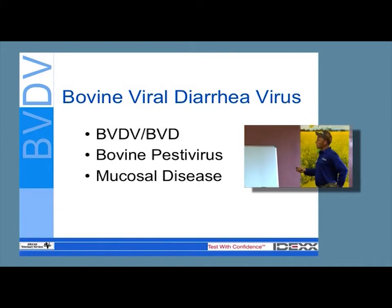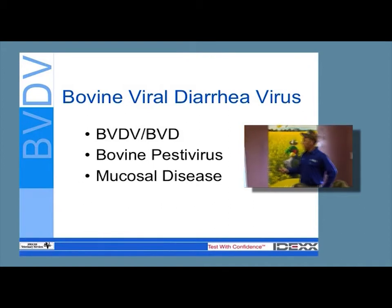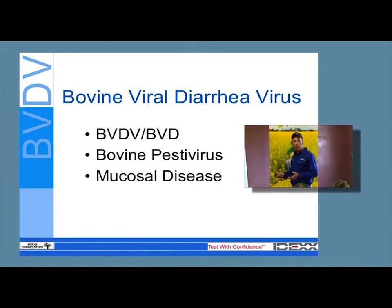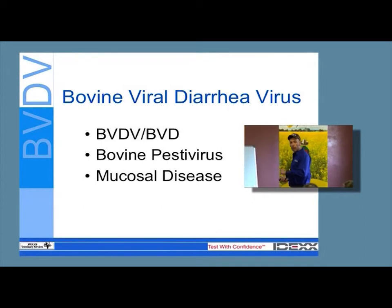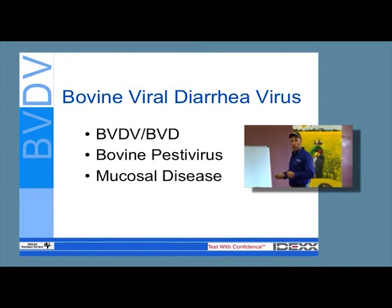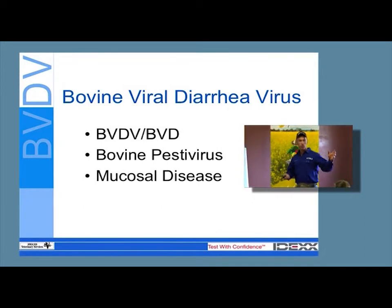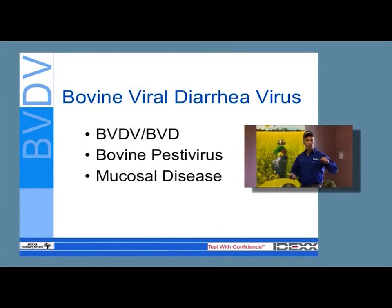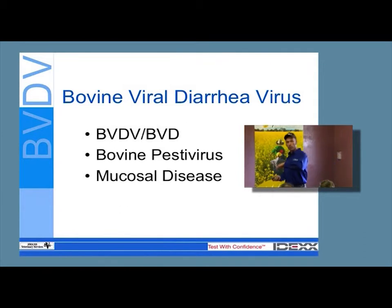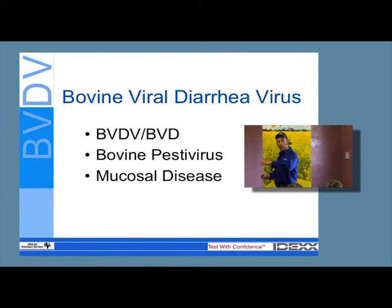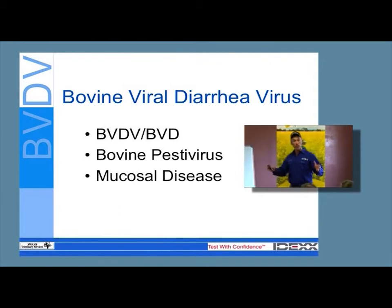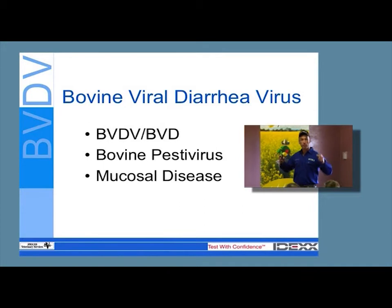Mucosal disease is actually a specific outcome for some animals affected with BVD. We'll talk about transient infection — animals that are sick with BVD for a little while — and we'll talk about persistent infection, or PIs: animals that are persistently or permanently infected with BVD.